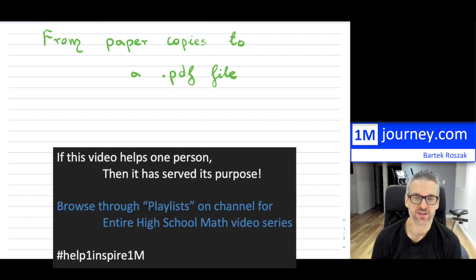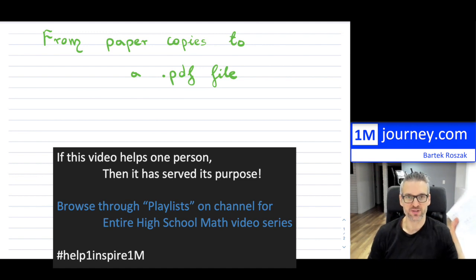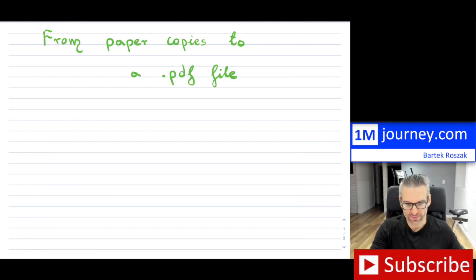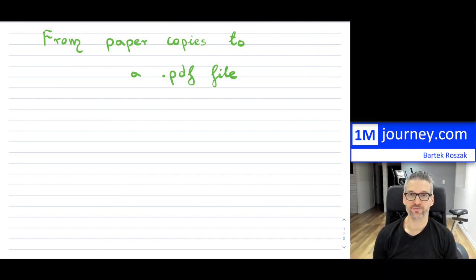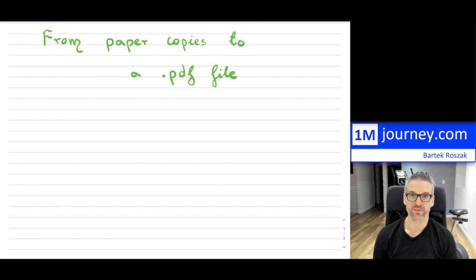Welcome in. What I want to do in this video is show you how to take paper copies — something that you have written on — and transfer them into a PDF file, basically a digital file that you can share with anyone. It's super useful for receipts you want digitized, solutions for a test or assignments, or bank information. You can always transfer actual paper copies and then send them to somebody or just save it for yourself.